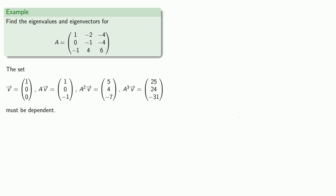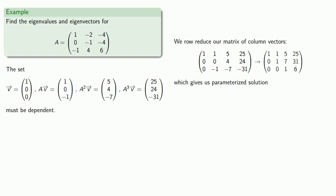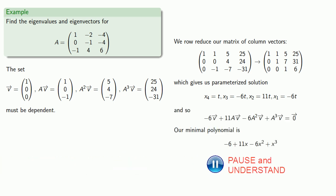And we'll let these be column vectors, and we'll row-reduce our matrix of column vectors, which gives us a parameterized solution, a linear combination equal to the zero vector, and a minimal polynomial with roots 1, 2, and 3, which will be our three eigenvalues.